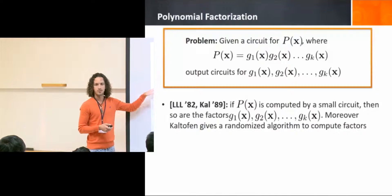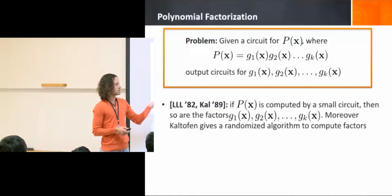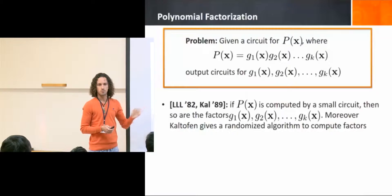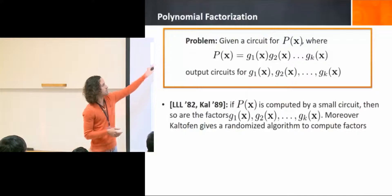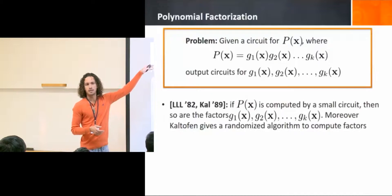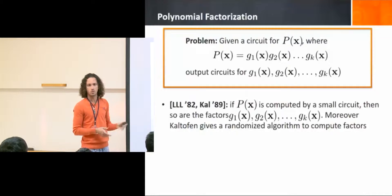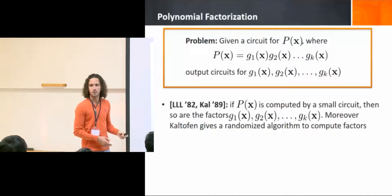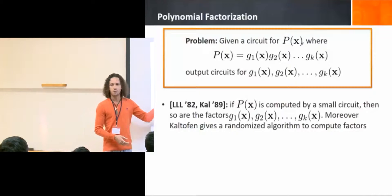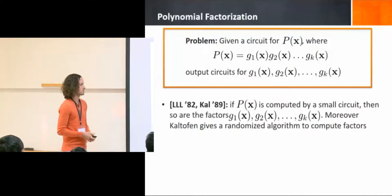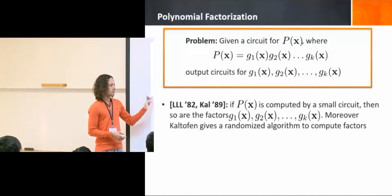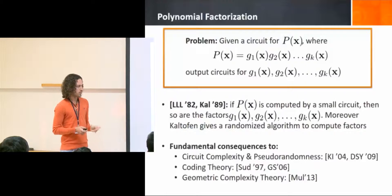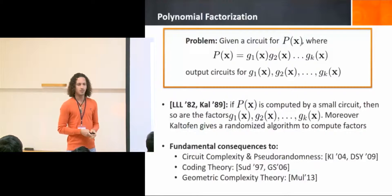In complexity theory, there's a very successful history with factoring. From the works of Lenstra, Lenstra and Lovász, and Kaltofen, we know that if P(x) is computed by a small circuit, then all of the factors gi are also computed by small circuits — for polynomials in VP, assuming polynomial degree. Kaltofen also gives a randomized algorithm to compute the factors. This has fundamental consequences to circuit complexity and pseudo-randomness, by the works of Kabanets-Impagliazzo and Dvir-Shpilka-Yehudayoff, as well as GCT, coding theory via Sudan and Guruswami-Sudan, and list decoding.